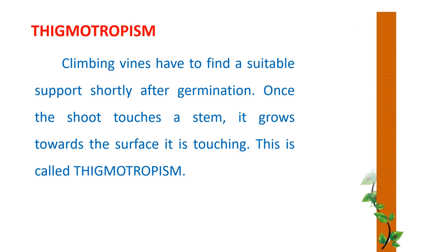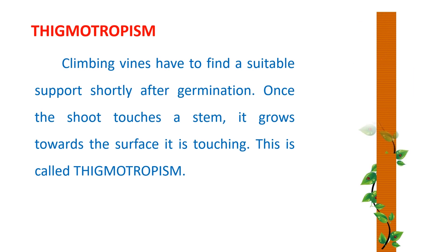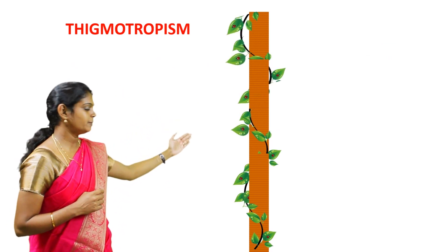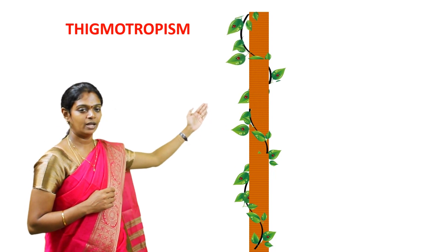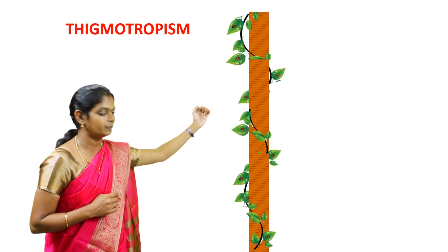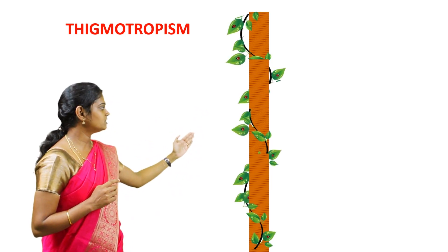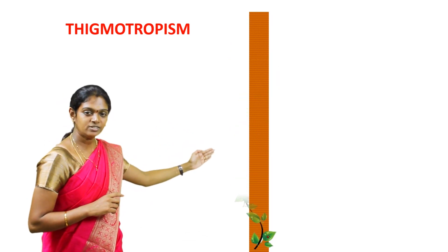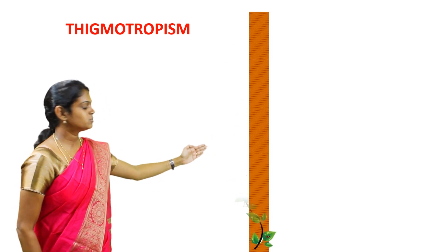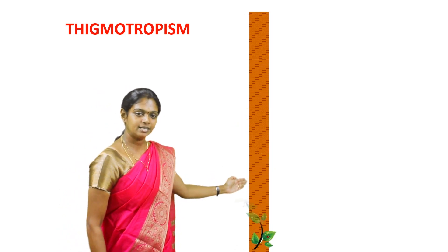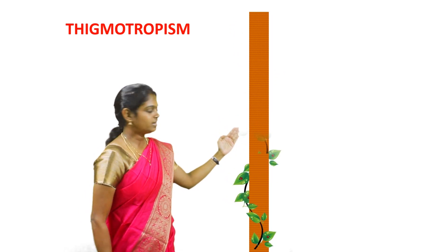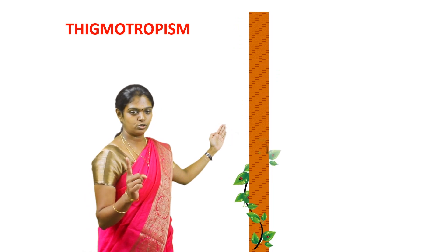Now let's move on to thigmotropism. 'Thigmo' means touch. Climbing vines need to find suitable support shortly after germination. Once the shoot touches a stem, it grows towards the surface it is touching — this is called thigmotropism. Here is an example: a creeper. You can see the trophic movement of the creeper bending, turning, or coiling around a stem. Until the creeper reaches the support, there is no bending, but as soon as it touches, you can notice turning, bending, and coiling. Based on its touch, thigmotropism movement happens.